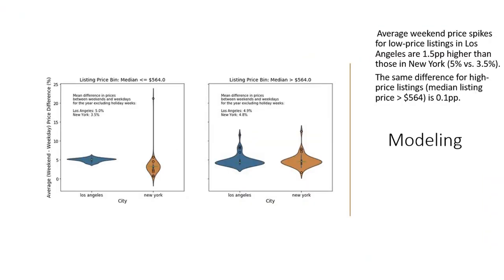This chart shows the average weekend price spikes for low price listings in Los Angeles is 1.5% price higher than those in New York. So that is 5% to 3.5%. We have the same type of difference for high price listing, but it is only 0.1 price point.